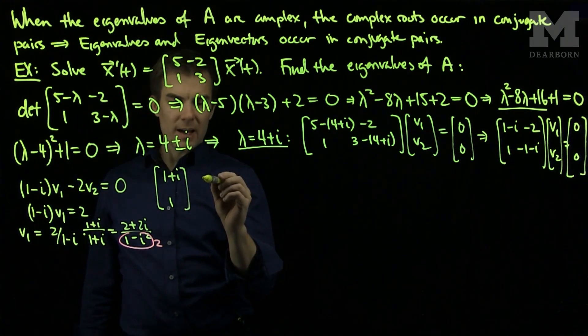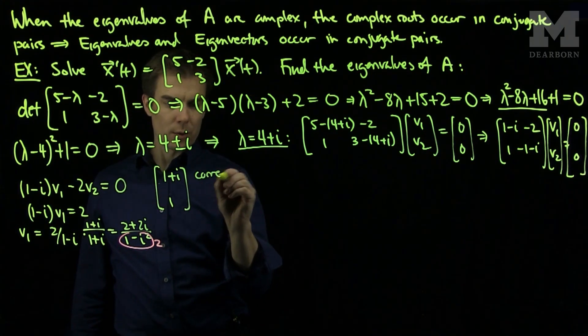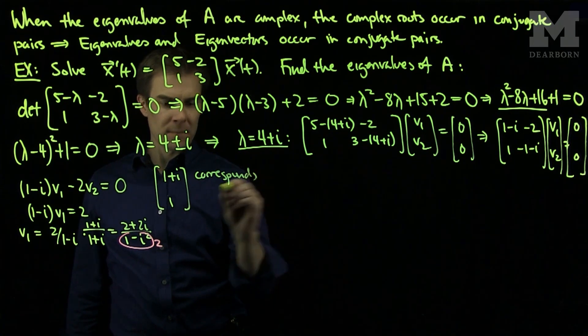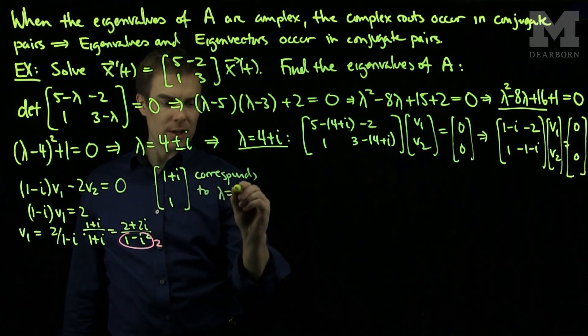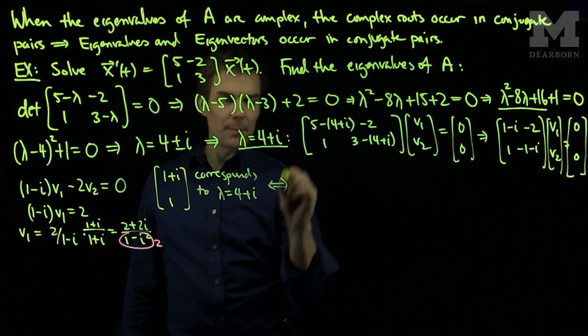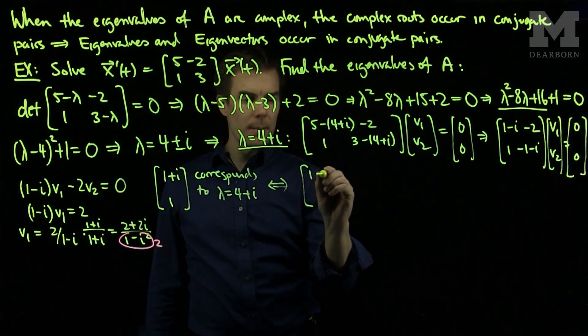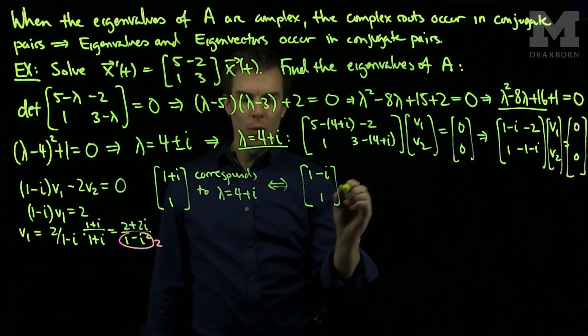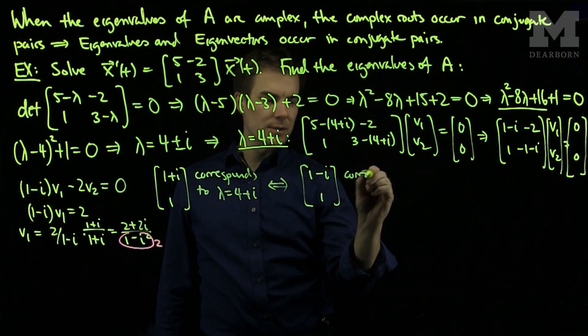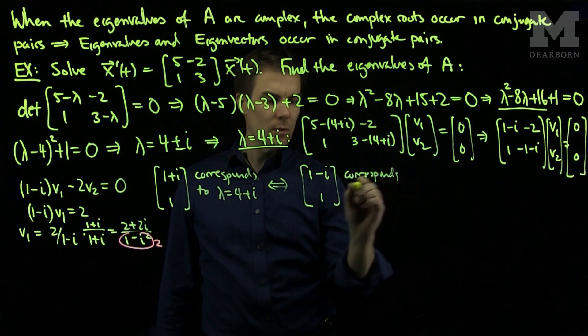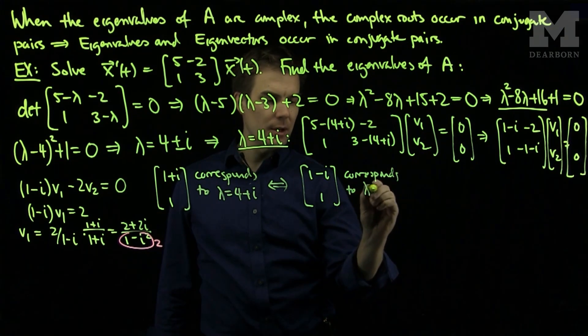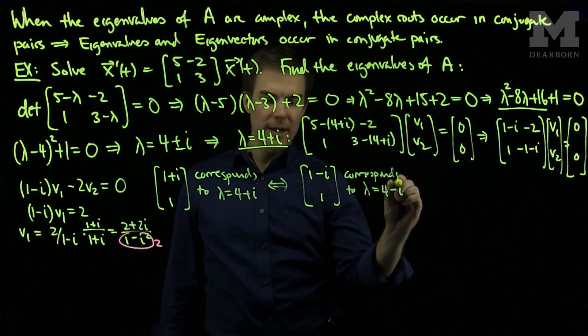This is the eigenvector corresponding to λ = 4+i. By our conjugate root theorem, [1-i; 1] will be the eigenvector that corresponds to λ = 4-i.